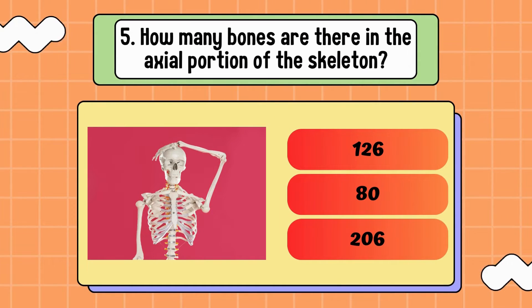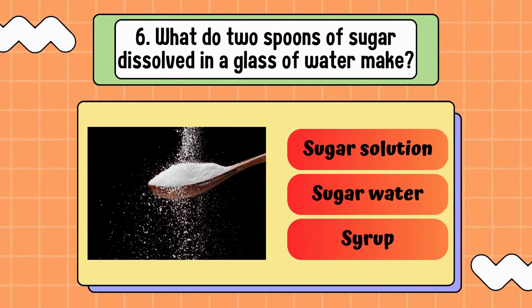How many bones are there in the axial portion of the skeleton? 126, 80, or 206? Answer is 80. What do two spoons of sugar dissolved in a glass of water make? Is it sugar solution, sugar water, or syrup? Answer is sugar solution.